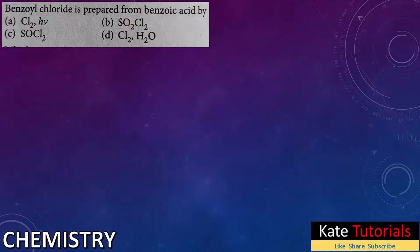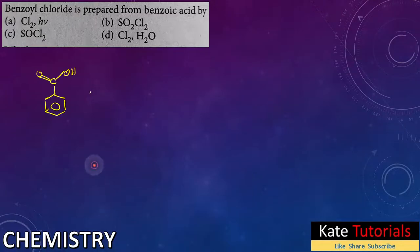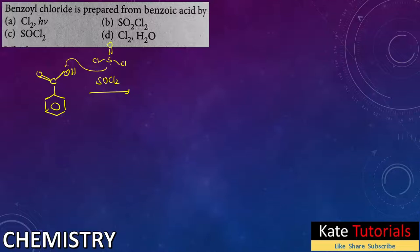Let me explain the mechanism. I take benzoic acid: benzene ring with -COOH. To this I add SOCl₂ — thionyl chloride — whose structure is S(=O)Cl-Cl. Sulfur is electrophilic and the oxygen in -COOH is electron rich, so the reaction happens.